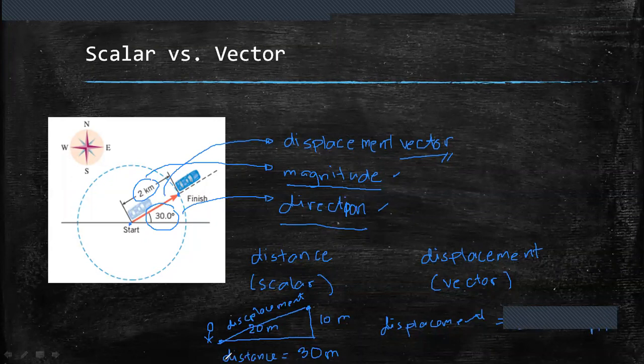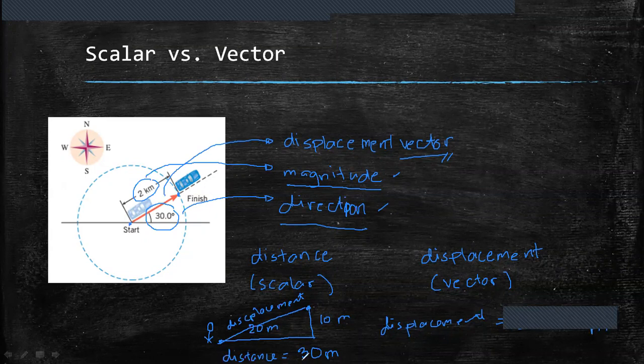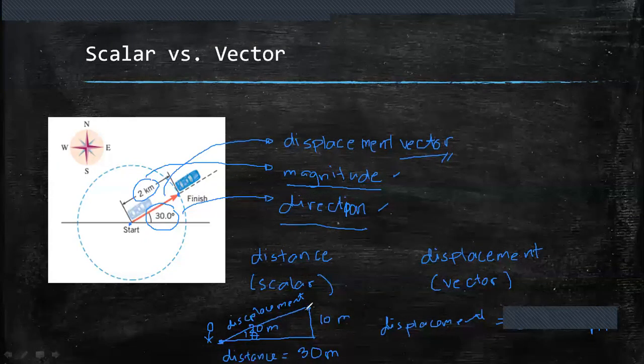So the distance has no sense of the direction, only magnitude. While displacement must consider the direction it takes. So the direction is this angle from where he started to the end point.